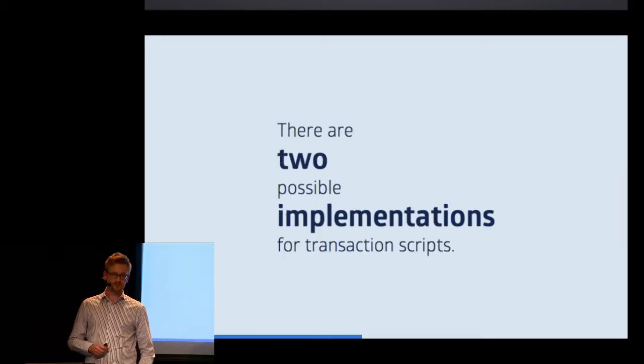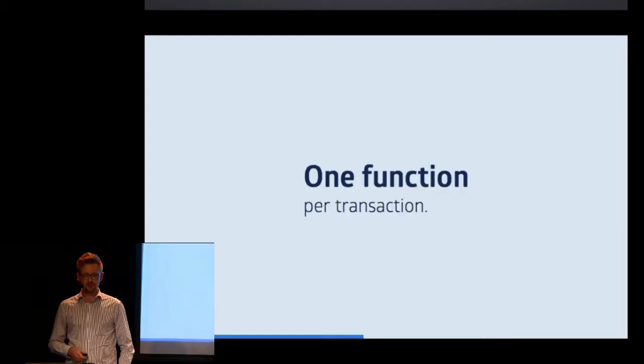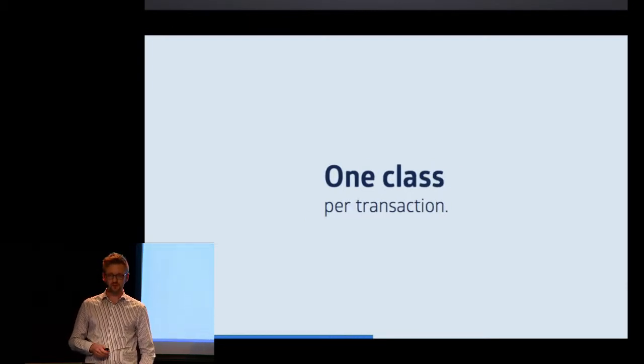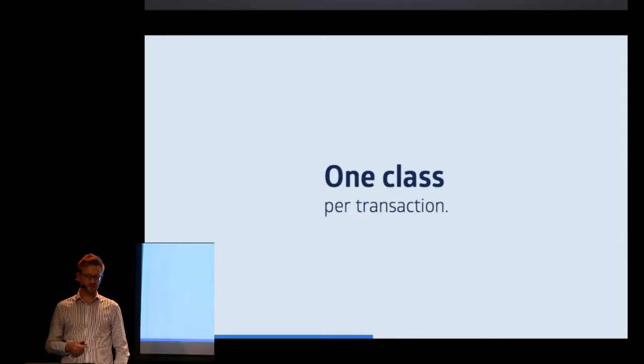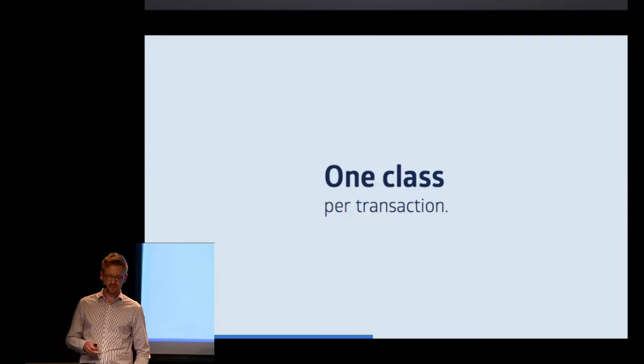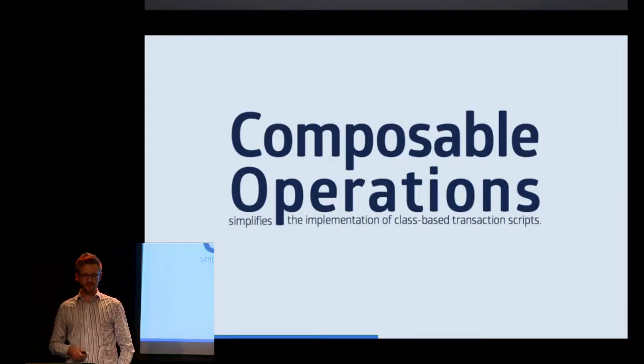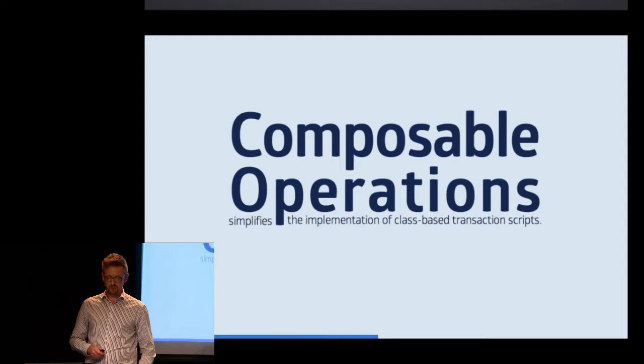There are two ways you can implement a transaction script. There is a very simple one where you simply implement one static function per transaction. But I always stick to the latter one, especially in large Rails applications, because a long function is not enough. So I always go and use the one-class approach. So I have the possibility of extracting code fragments out into individual methods. To make this even easier, I wrote a gem called Composable Operations.